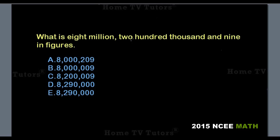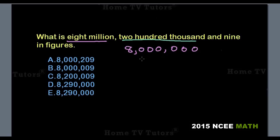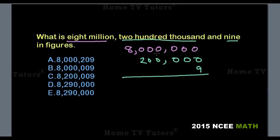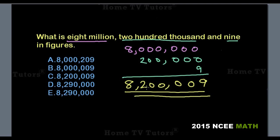What is 8,200,009 in figures? Representing 8 million in figures is 8,000,000. Then 200,000 in figures is 200,000. Lastly, representing 9 in figures. Adding the numbers together, we have 8,200,009 in figures. The answer option C is the right answer.